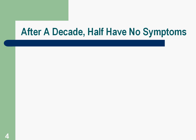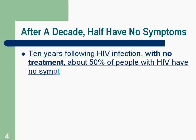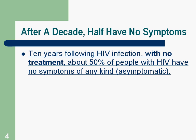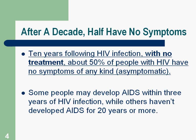We know that after a decade of HIV infection, half of people have no symptoms. This is from a study done before we had effective medicines — 50% of people have no symptoms of any kind 10 years following HIV infection with no treatment. Some people may develop AIDS or get sick from HIV within three years of infection, while others haven't developed AIDS for 20 years or more. There's no way to predict what's going to happen with anybody.